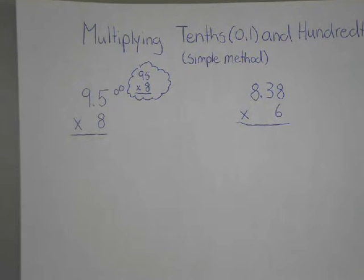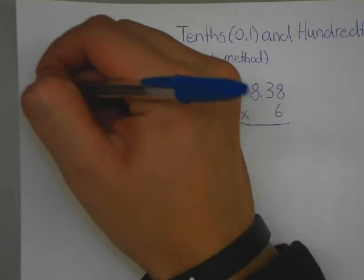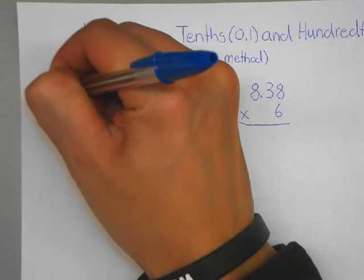So pretend you're just going to ignore it and you have 95 times 8 instead. We're just going to put that in our head. So we're going to think like this in a nice cloud. We're really doing 95 times 8. So we're ignoring that decimal right off the bat.